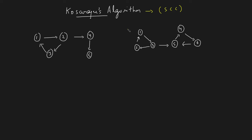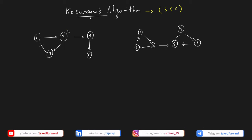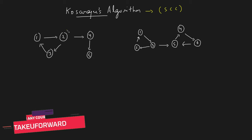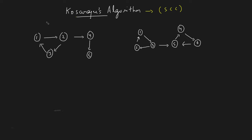What are strongly connected components? A strongly connected component is a component in which if you start from any node you can reach every other node in that component. For example, in this graph g1, this portion is a strongly connected component.